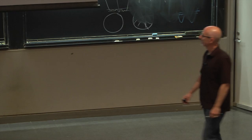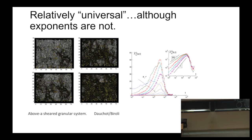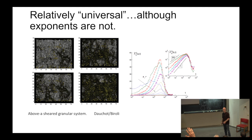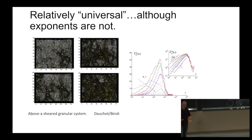You can measure these kinds of nonlinear susceptibilities associated with growing dynamical length scales in lots of different systems. You can take bacterial colonies or driven granular systems — where it's driven by shaking rather than temperature — and see very similar things. In real space, if you look at the overlap, you can see growing domains and translate that into growing susceptibilities and length scales. The exponents may change, but the behavior has some reproducible flavor across different systems.